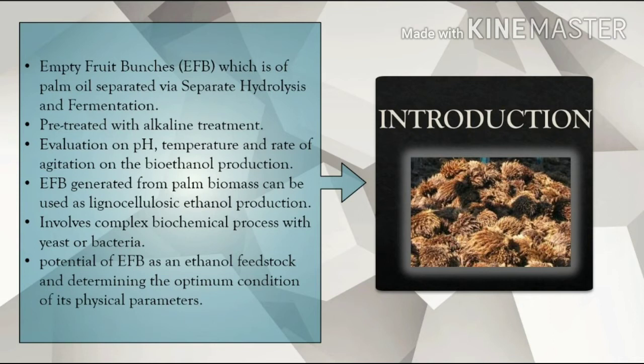Since the bioethanol production would be from the empty fruit bunches, known as EFB, let us know what it means. EFB is basically a part of a major biomass type generated in the oil palm industry, generated from palm oil mills. EFB is a lignocellulosic material consisting of a mixture of carbohydrate polymers — cellulose and hemicellulose. Lignocellulose refers to the plant dry matter, the biomass, and it is one of the most abundantly available raw materials on earth for the production of biofuels, mainly bioethanol.